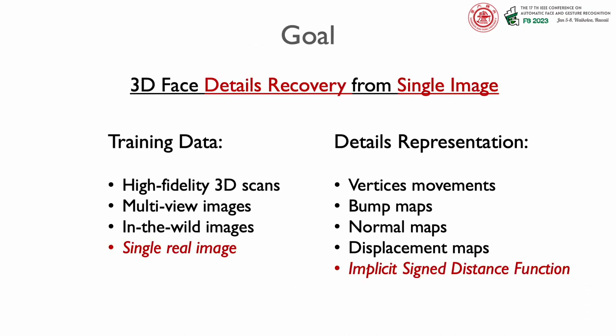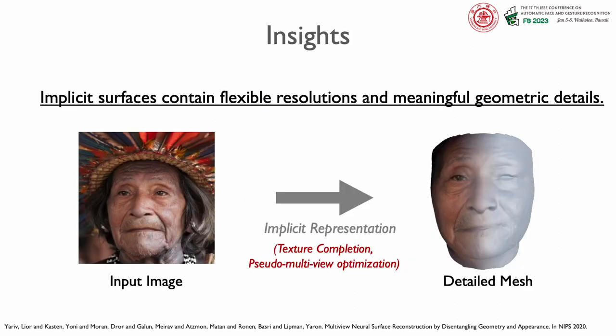In this paper, we aim at recovering accurate geometric details from a single image, without relying on facial datasets. Considering the above detail representation issues, we choose an implicit signed distance function to learn correct facial details in an unsupervised manner. Inspired by recent advancements in geometry reconstruction with implicit functions, we notice that implicit surfaces contain flexible resolutions and meaningful geometric details.